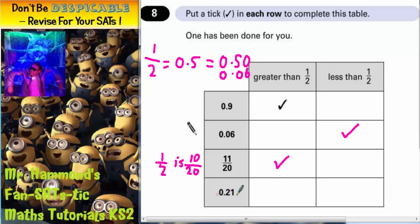The final one, 0.21. Again, this is a two digit decimal. So if we go up here to our two digit decimals, 0.21. You can see that 0.21 is going to be less than 0.50.